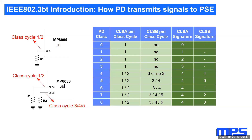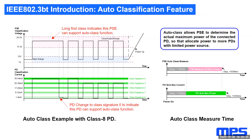Once the PSE determines what PD is connected, this slide shows how the PD communicates to the PSE during the classification event, in which case the PD draws a signature current. Different classes of power require different levels of signature current as shown in the table. Classes one through four pertain to the 802.3AF and AT standards, whereas classes five through eight pertain to the 802.3BT standard. One unique feature of the BT standard is the auto classification feature, which allows the PSE to determine the real maximum power of connected PDs so it can allocate power intelligently.